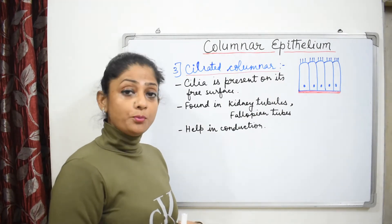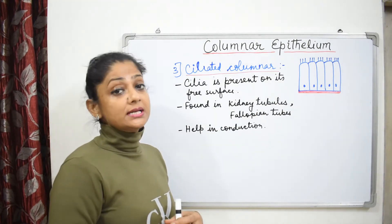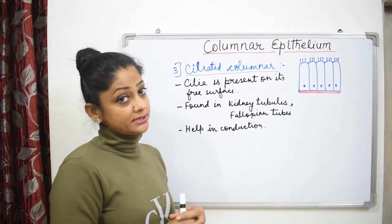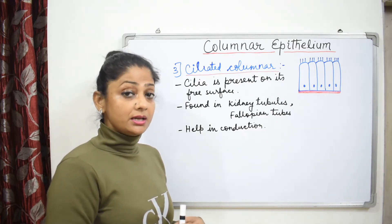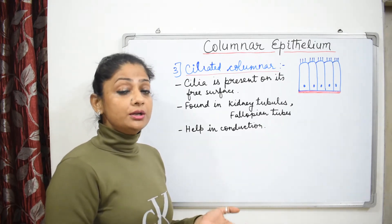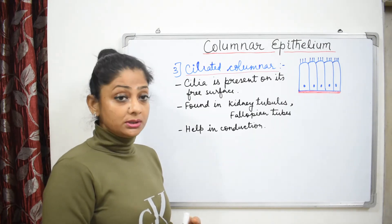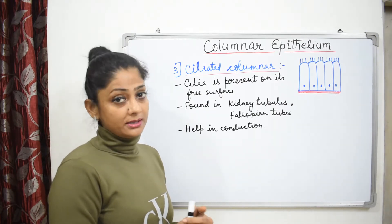So, what are their three points? First, cilia is present on its free surface. Second, it is found in kidney tubules and fallopian tube. Third, it helps in conduction.